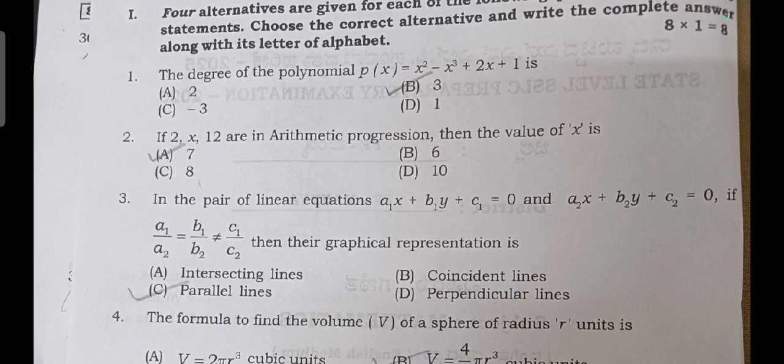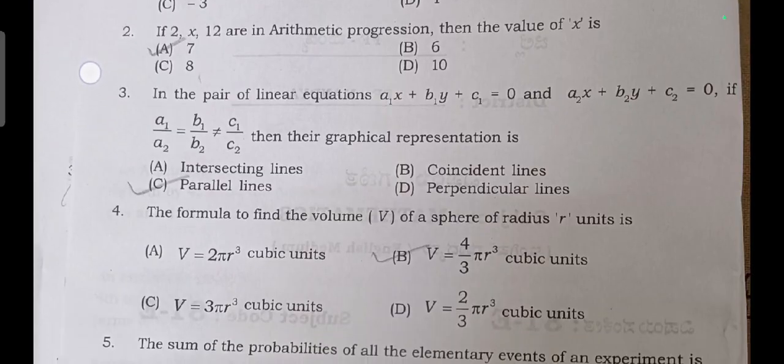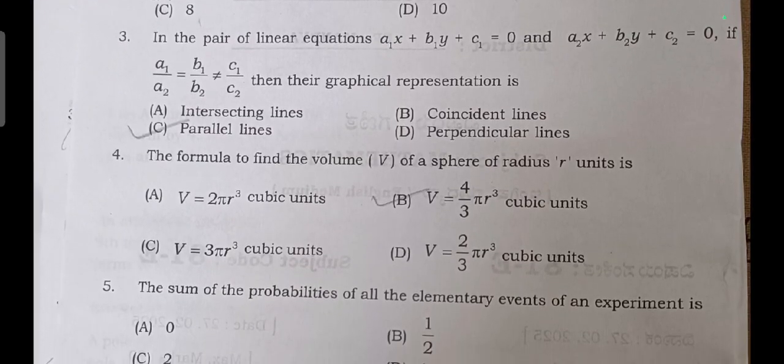For first one, degree of polynomial, answer is B: 3. Question number two, if 2, x, 12 are in arithmetic progression, then find the value of x. Answer is A: 7. Question number three, in the pair of linear equations if the lines in graphical representation are parallel lines.